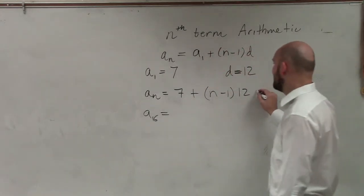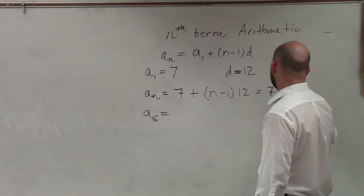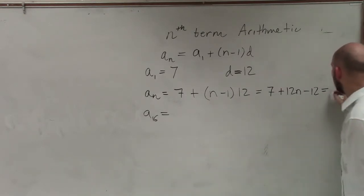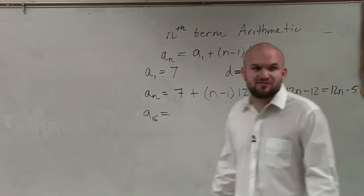So now I go and simplify that to 7 plus 12n minus 12, which equals a final formula of 12n minus 5. So that is your a sub n.